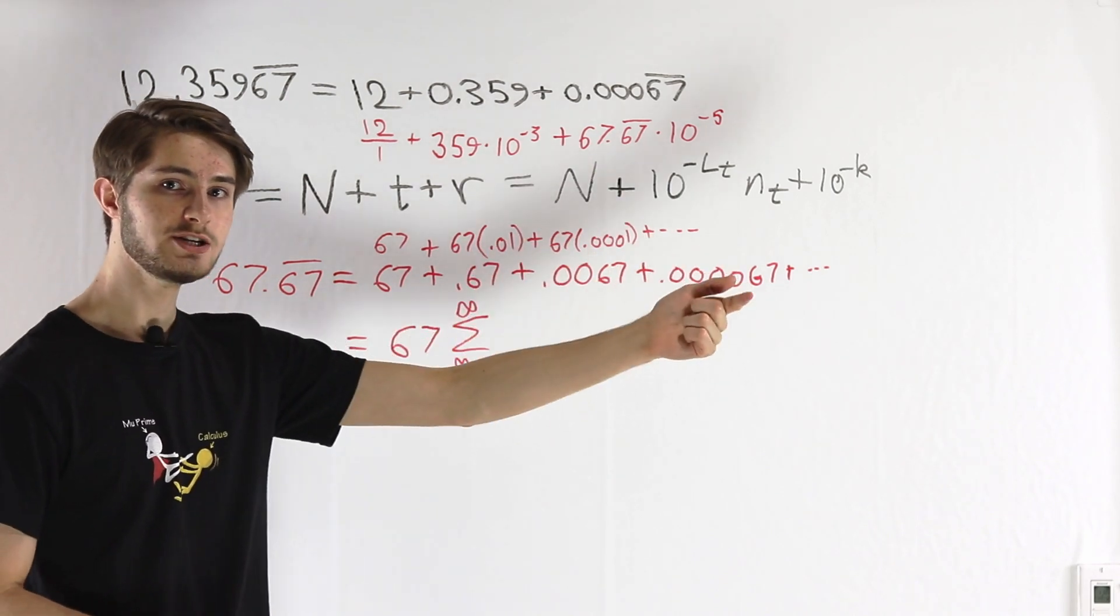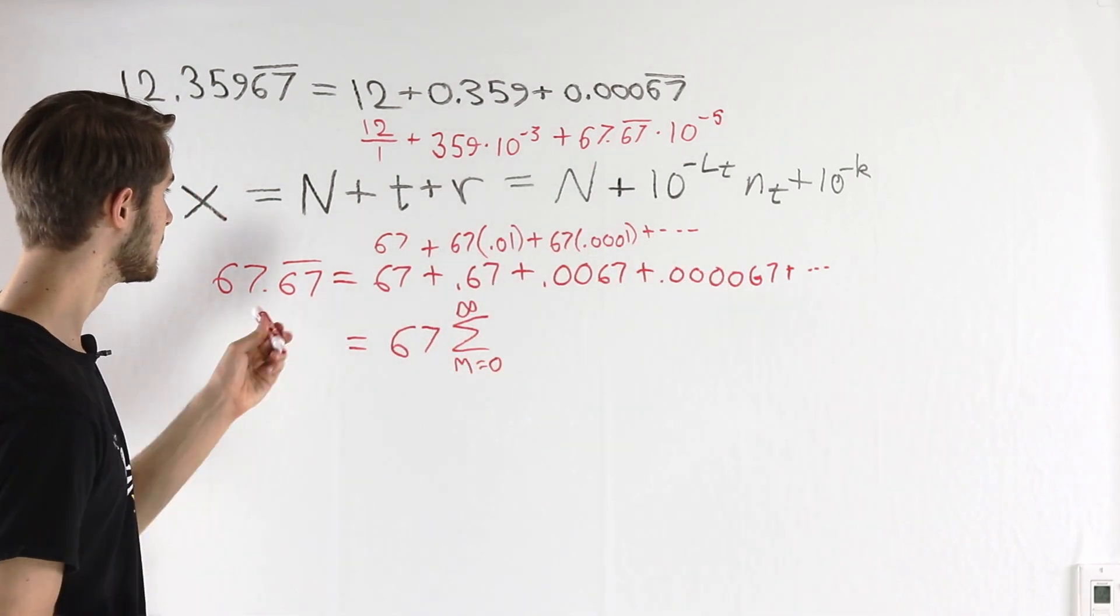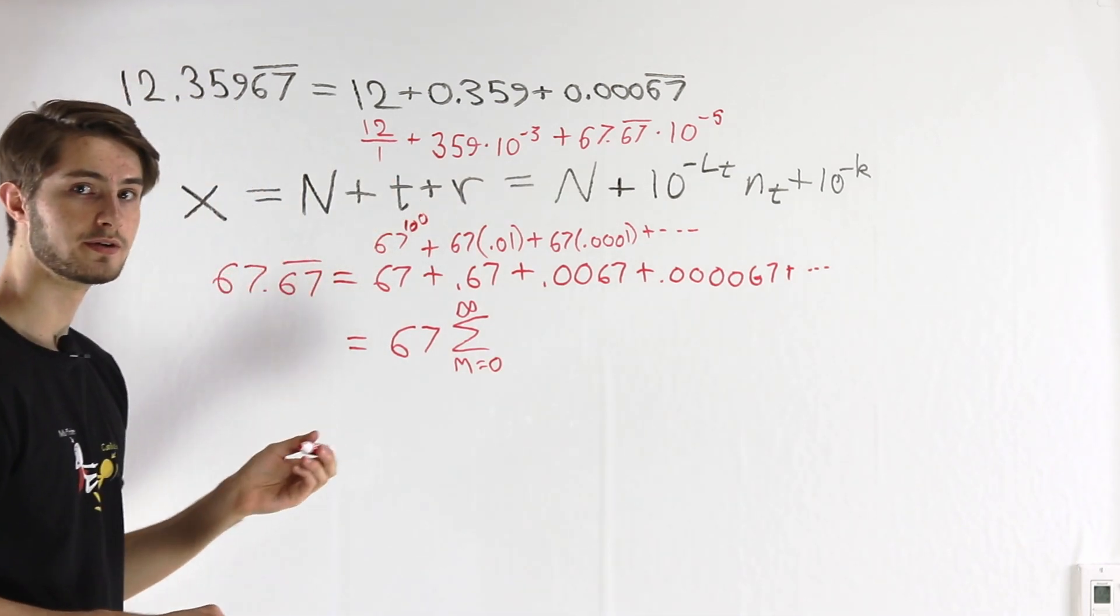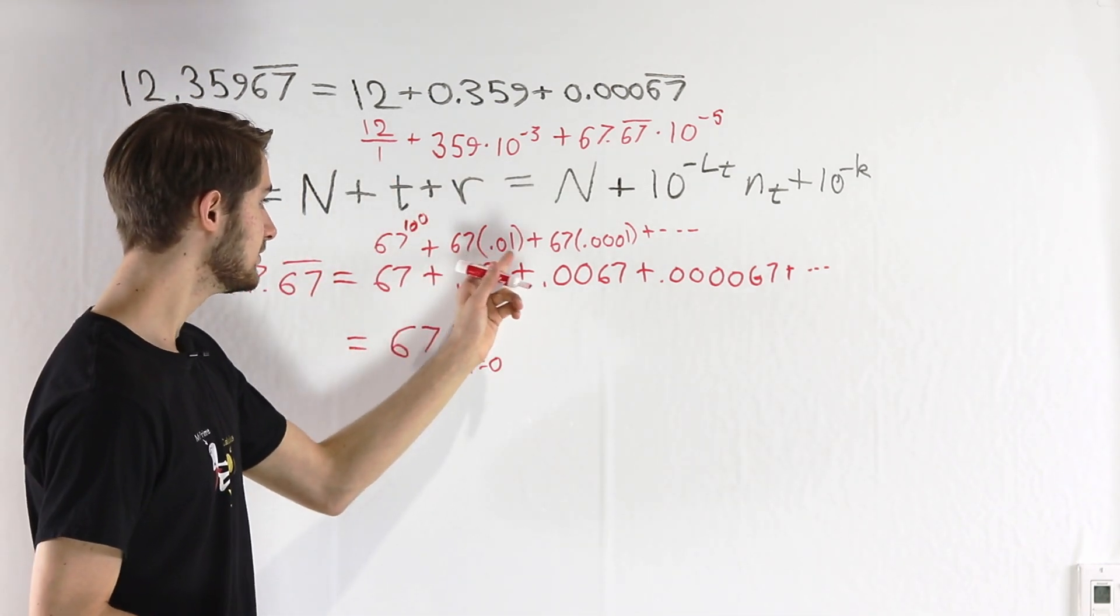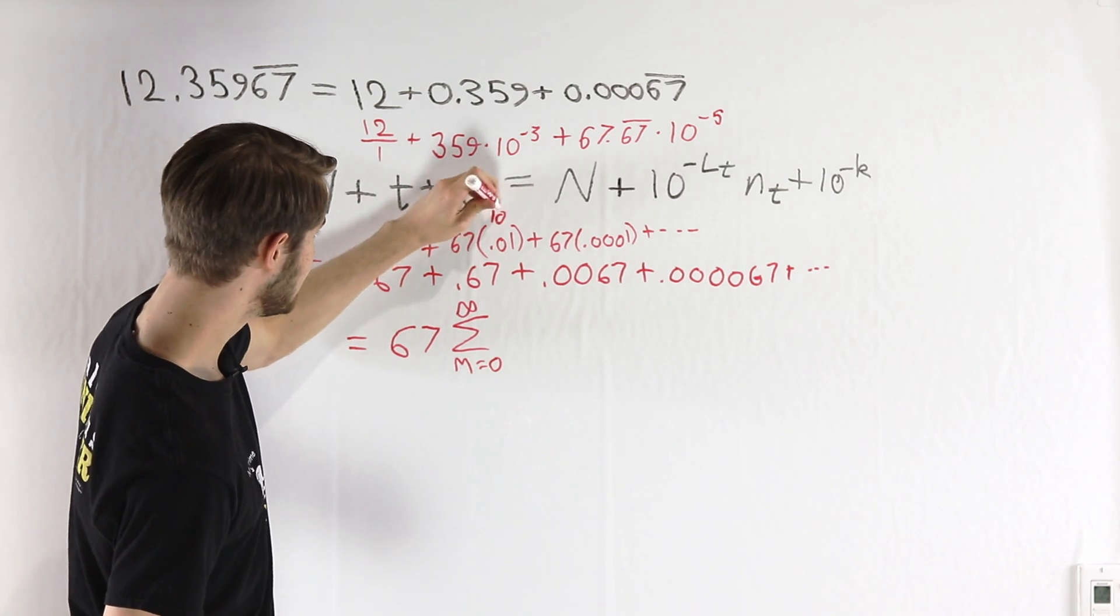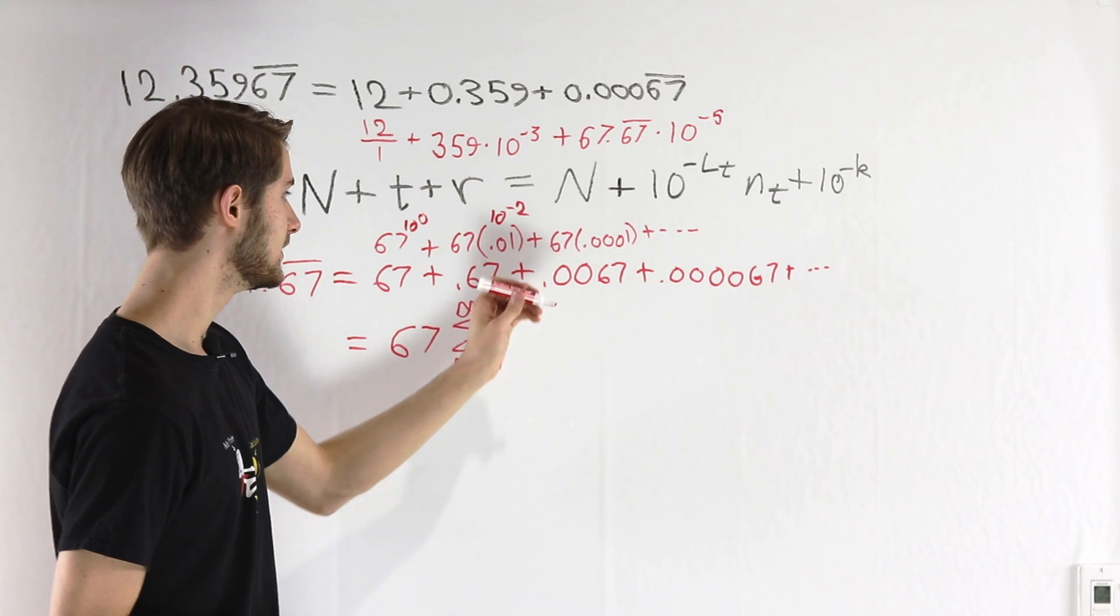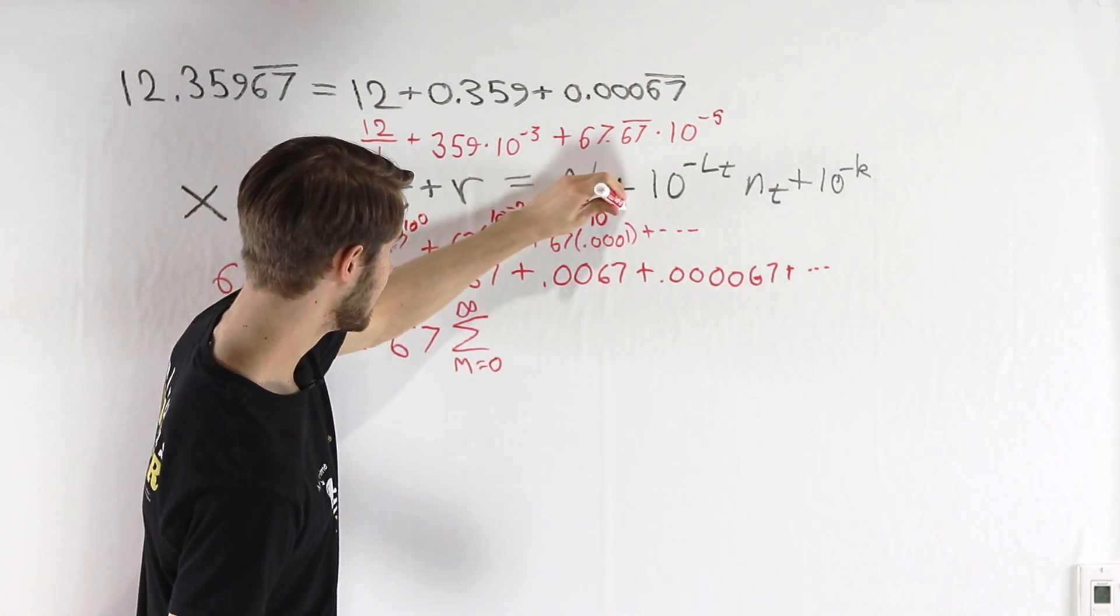How are we getting from each term to the next? Well, we know that 1 is 10 to the 0. 0.01, that's 10 to the negative 2. 0.0001, that's 10 to the negative 4.